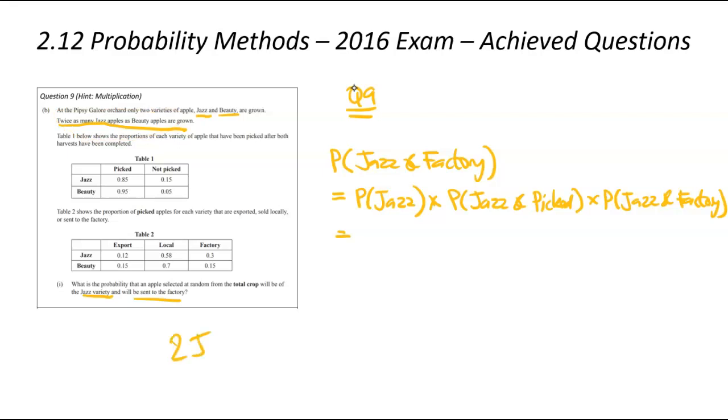That means if there's two jazz apples, there'll be one beauty apple. That means two out of three apples will be that jazz type. So, the probability is going to be two out of three. That has to be multiplied by the jazz ones being picked. That's that 0.85 up the top there. And that has to be multiplied by the jazz apples going to the factory, which is 0.3. When you plug all that into your calculator, you're going to get 0.17 as your answer of a jazz apple being picked and going to the factory.